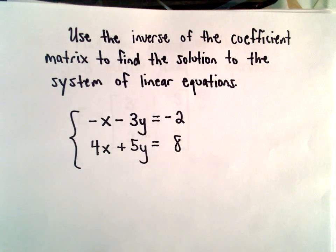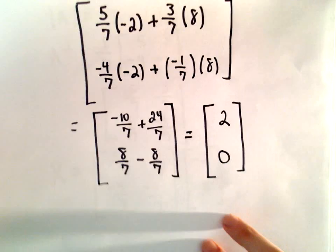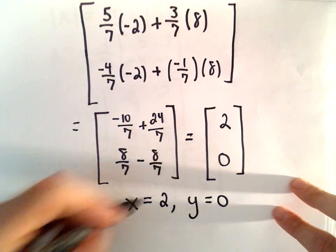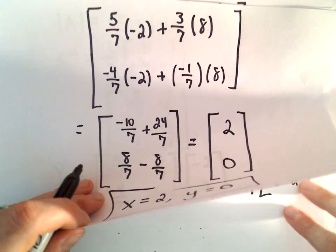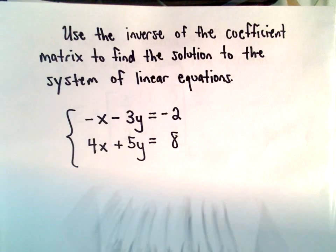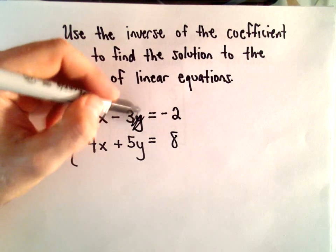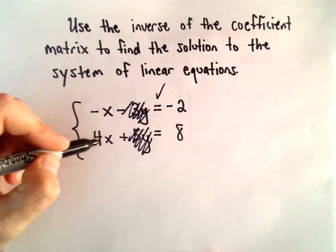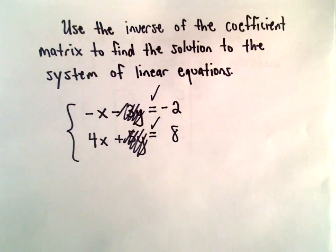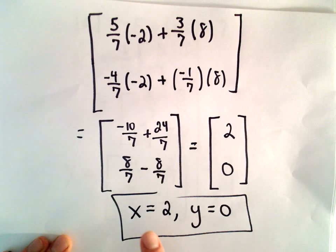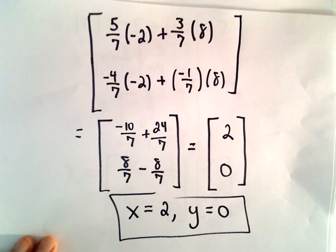So the solution to our original system of equations will be x equals positive 2 and y equals 0. And I'm going to go back, I always like to check these just because it's easy to make a little mistake. Let's go back to the very original system. If y is 0, we're just going to get rid of those terms. If x is 2, we will get negative 2, so that works. And if x again equals 2, 4 times 2 will be 8, so that also works. So it looks like we didn't make any arithmetic mistakes, so our solution will be x equals 2 and y equals 0.